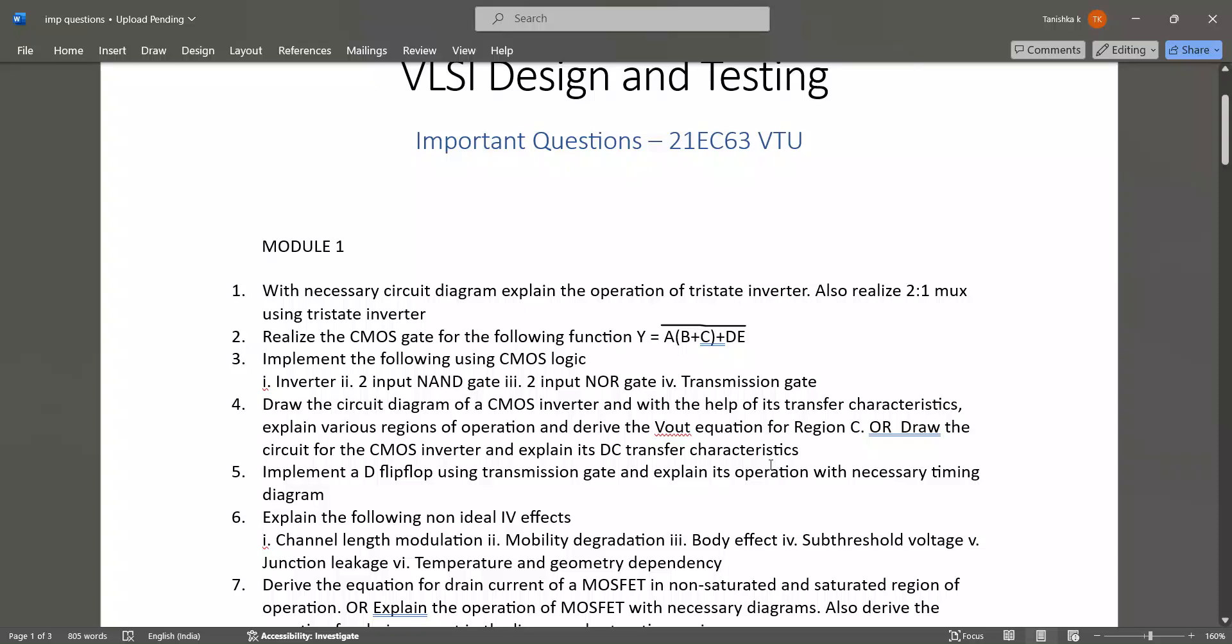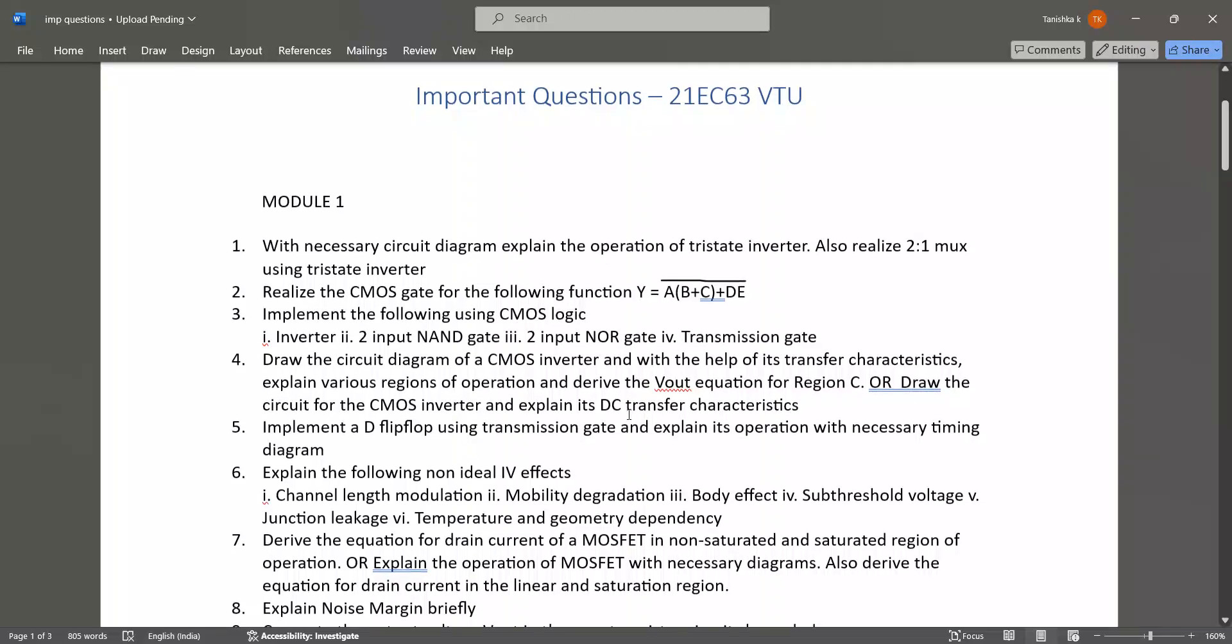Also realize 2:1 MUX using a tri-state inverter. Then realize the CMOS gate for the following function, type of problems, and implement the following CMOS logic like inverter, 2-input NAND gate, 2-input NOR gate, and transmission gate.